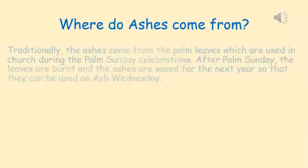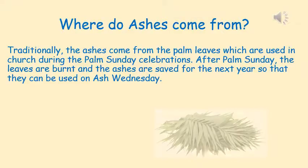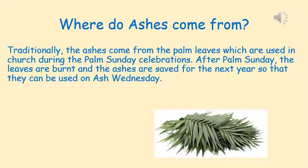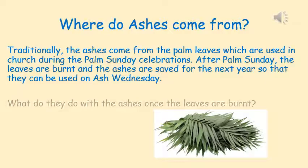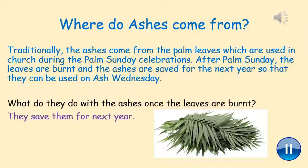Where do ashes come from? Traditionally the ashes come from the palm leaves which are used in church during the Palm Sunday celebrations. Here is a picture of some palm leaves. After Palm Sunday the leaves are burnt and the ashes are saved for the next year so they can be used on Ash Wednesday. What do they do with the ashes once the leaves are burnt? They save them for the following year.